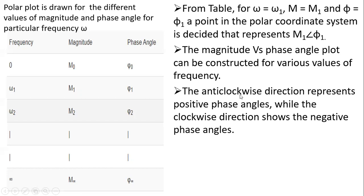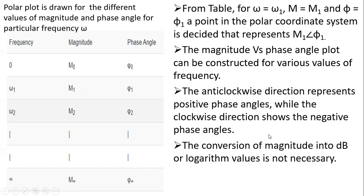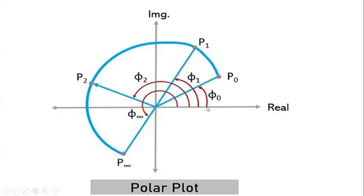The anti-clockwise direction represents positive phase angles while the clockwise direction shows negative phase angles. The conversion of magnitude into decibels or logarithm values is not necessary here — we can straight away take simple values. This is a real axis and this is an imaginary axis of a polar plot. We calculate the angle starting from the real axis: φ₀, φ₁, φ₂, up to φ∞. If we go anti-clockwise we take it as positive; if we go clockwise we take it as negative.